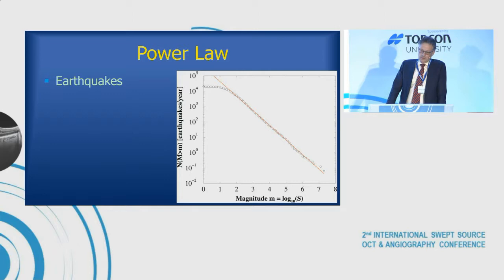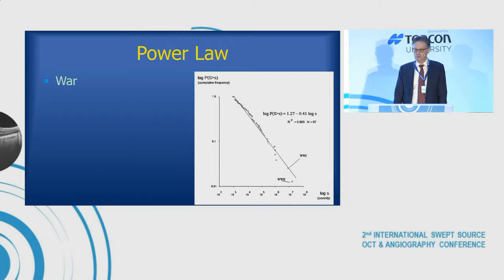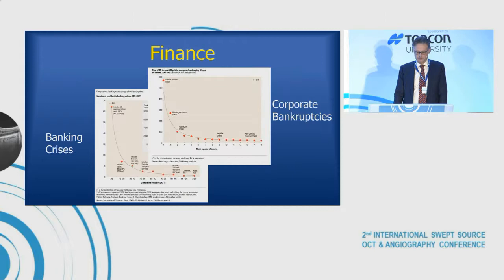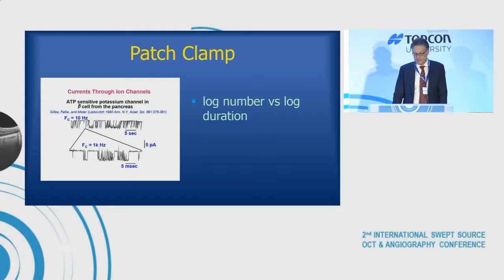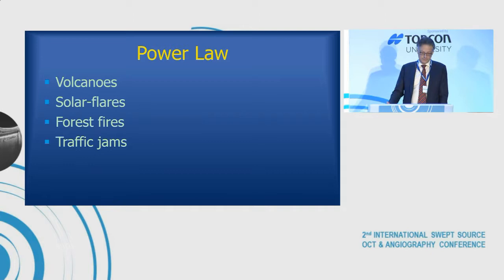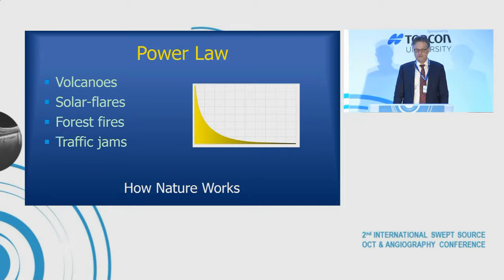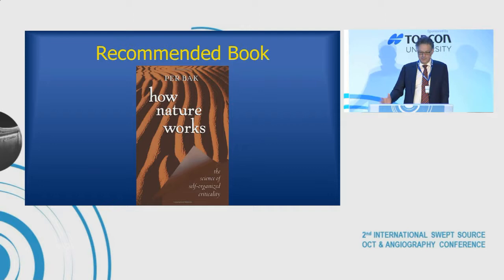Wars follow the same thing — the log of the number of wars is proportionally a straight line on a log-log plot relative to the size of the war. You can look at banking crises, corporate bankruptcy, how often a potassium channel is open per second — it follows a log-log straight line. The same is true for volcanoes, solar flares, forest fires, and traffic jams. That's really how nature works in a lot of ways. Per Bak wrote a very short, nice book called 'How Nature Works' devoted to this topic.